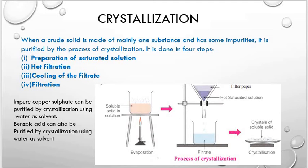In the first step, a saturated solution — one which cannot dissolve any additional quantity of solute — is prepared. The main solute forms an almost saturated solution, but the solution is not saturated with respect to the soluble impurities since they are present in very small amounts. In the second step, hot filtration, the solution is filtered while hot so that undissolved impurities are removed as residue.